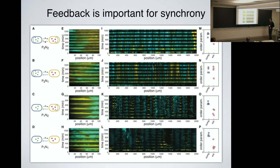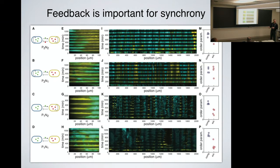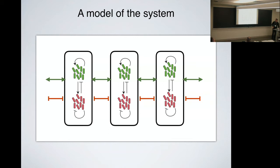You can quantify synchrony via a Kuramoto order parameter. In compact small traps, you get high order parameters across several repeats. In large traps, you get high order parameters with positive feedback and small order parameters without it. The size is the only difference — in small traps, cells can communicate across the entire trap, as 50 microns is about the communication distance, whereas the large trap is 2,000 microns — much larger than the communication distance.